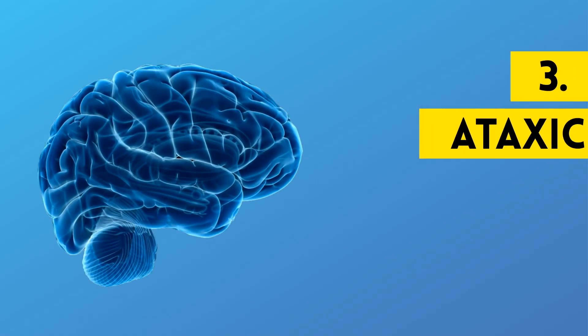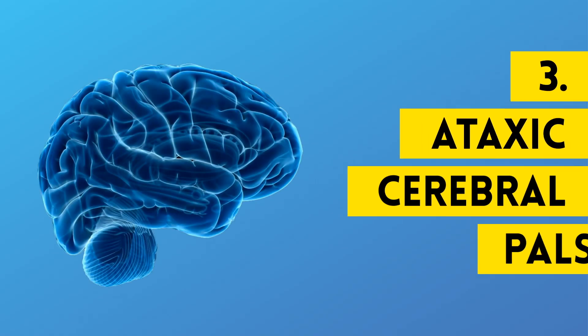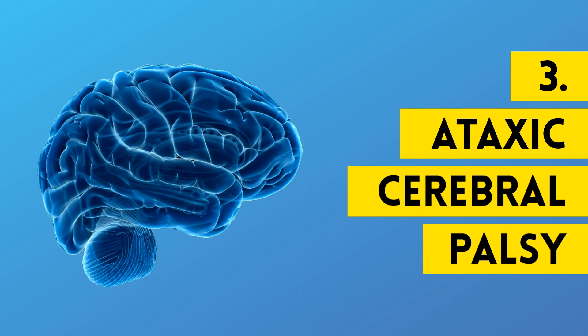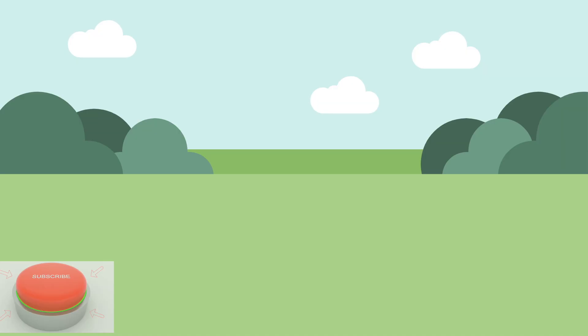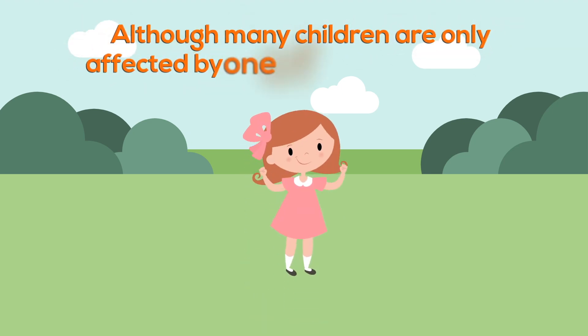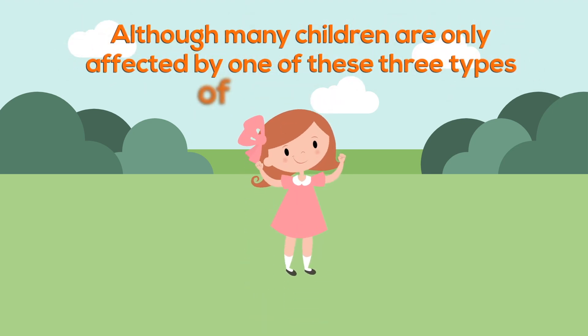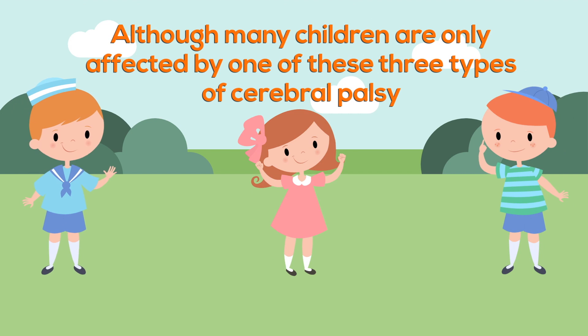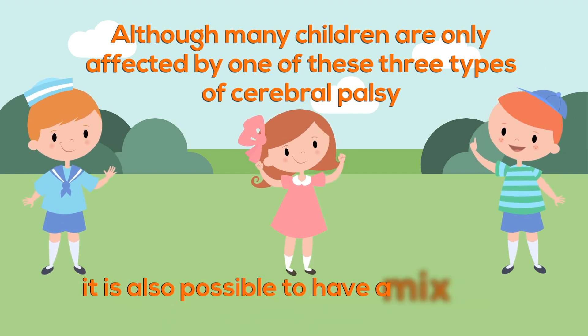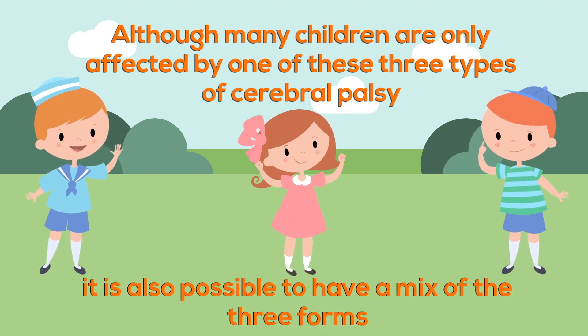The third and least common type is called ataxic cerebral palsy. Children with ataxic CP have trouble with balance and depth perception, and therefore have a difficult time keeping themselves steady. Although many children are only affected by one of these three types of cerebral palsy, it is also possible to have a mix of the three forms.